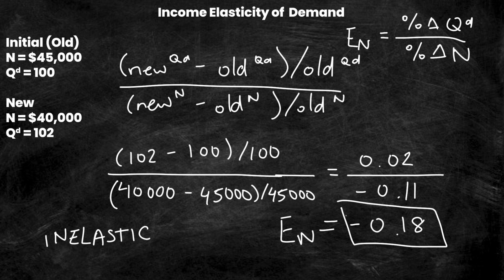However, with inferior goods, your income and your quantity demanded are actually inversely related. We have a video that goes over inferior versus normal goods. As your income goes down, you would actually demand more of the inferior good because you can't afford that normal good that you would otherwise be purchasing. So if income goes down from 45,000 to 40,000 and quantity demanded goes up from 100 to 102, then I know that one, my elasticity of demand is going to be negative, and two, I'm dealing with an inferior good.